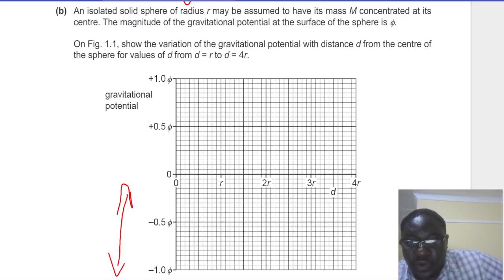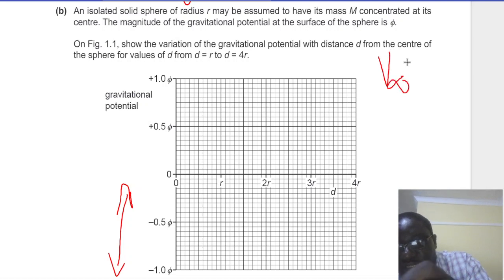Also we know that potential at infinity is taken to be 0. Some use the symbol U or symbol V. It's okay. So potential at infinity is 0, and elsewhere in the gravitational field, the potential is negative.